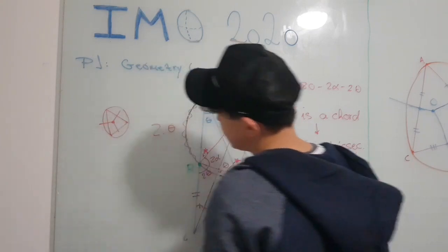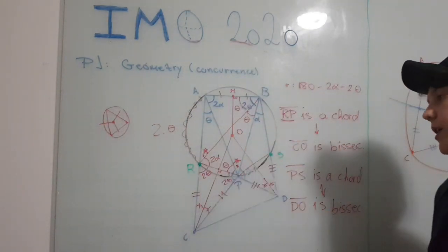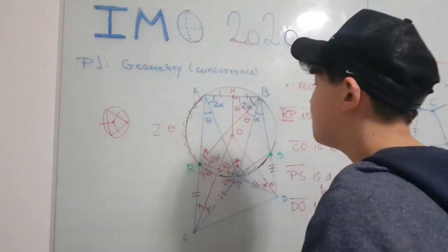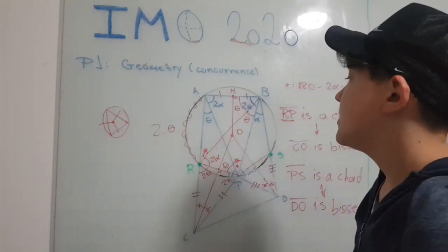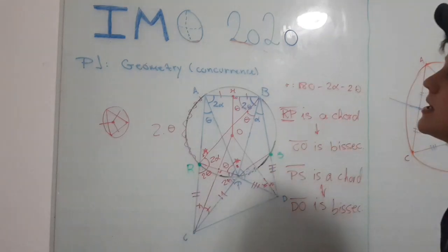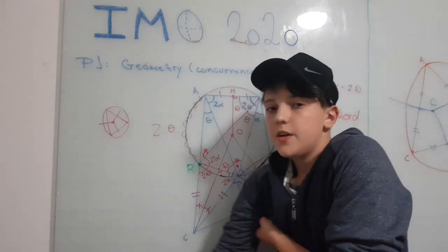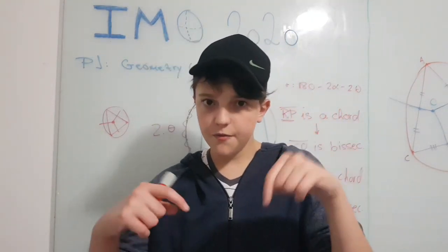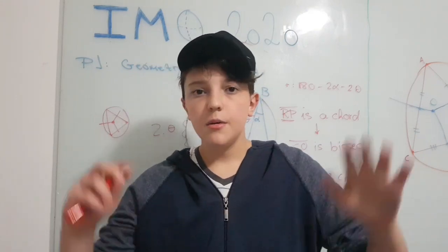I think that's it — I've already solved it and explained it to you. On the test you would have to write it, and the key point is O, which is the center of the circumcircle. I hope you enjoyed the video. Until the next one — goodbye! Don't forget to subscribe to the channel and give a like on the video. Bye-bye!